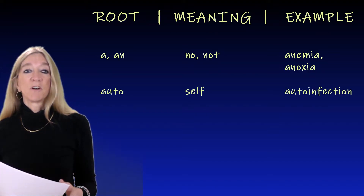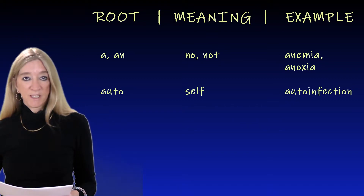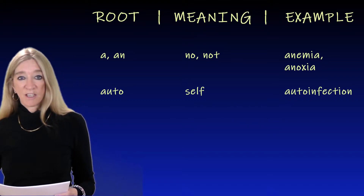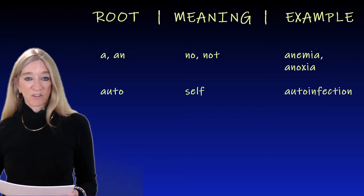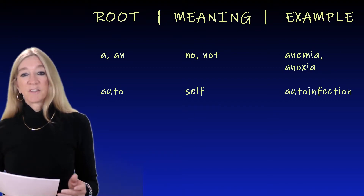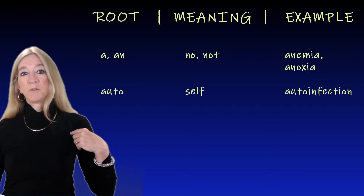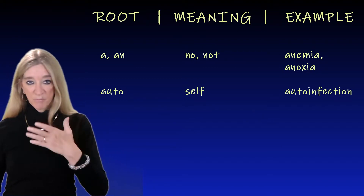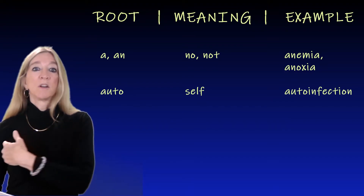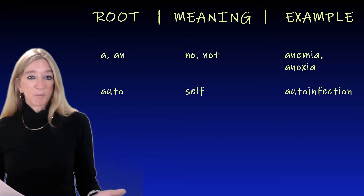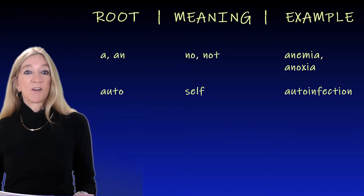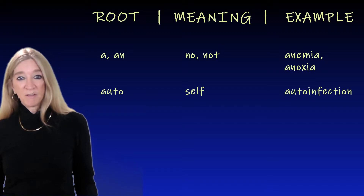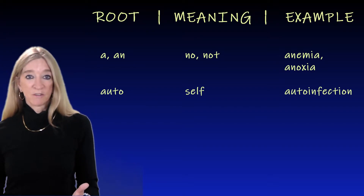The next root, 'auto,' meaning self. An example is auto-infection, which is an infection in which a pathogen moves within the body from one location to another. And an example from everyday life: automobile, self-motion.